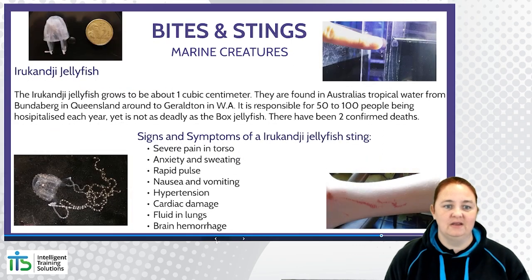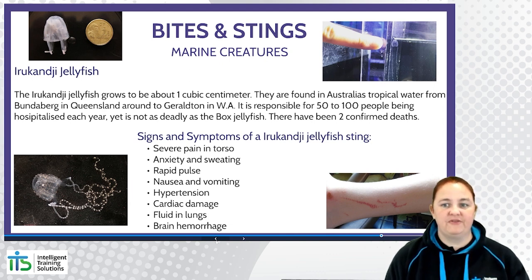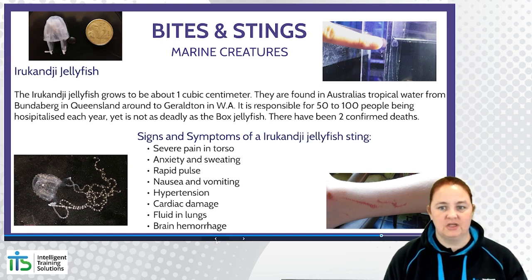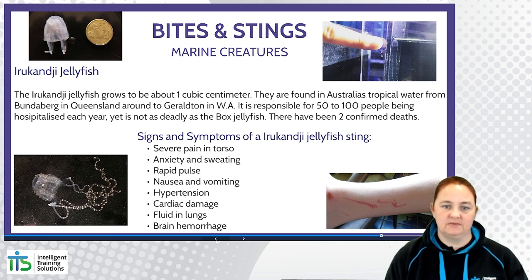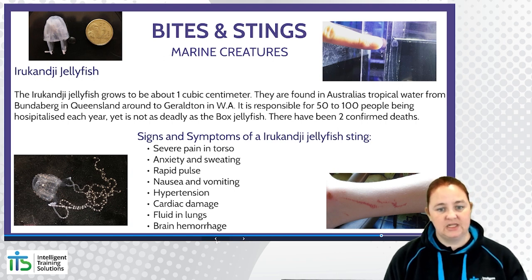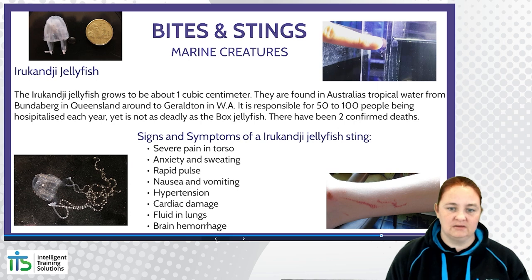The Irukandji jellyfish grows to about one cubic centimetre and is found in Australia's tropical waters from Bundaberg in Queensland around to Geraldton in WA. It is responsible for 50 to 100 people being hospitalised each year, with two confirmed deaths — not as deadly as the box jellyfish but still dangerous. Signs and symptoms include severe pain in the torso, anxiety and sweating, rapid pulse, nausea and vomiting, hypertension, cardiac damage, fluid in the lungs and brain haemorrhage.